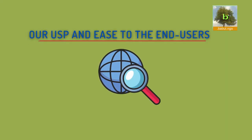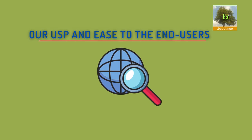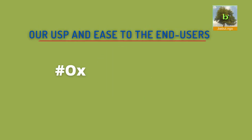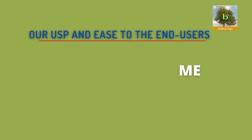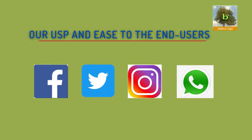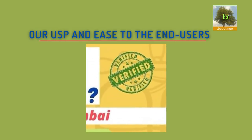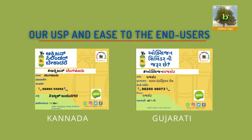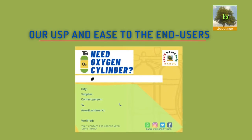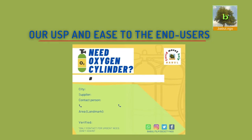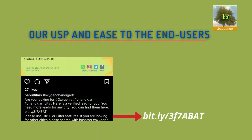Verified result of oxygen supplier in a particular city or locality, easy to search with just one hashtag. Hashtag format is #Oxygen[CityName] or #OxygenX where X is the name of the place. Posts available on Facebook, Twitter, Instagram and WhatsApp, each with a verified seal updated regularly. Posts also available in native languages other than English and Hindi. Simple, quick-to-identify, uncluttered post design with a specific colour scheme and design pattern. A bit.ly short link to the Excel sheet is also given in the social media post.